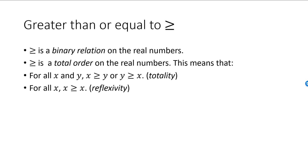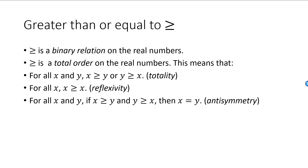Greater than, however, is not reflexive as x is not greater than itself. The third condition is called antisymmetry. Greater than or equal to is antisymmetric since if x is greater than or equal to y and y is greater than or equal to x, then it must follow that x and y are the same number. Antisymmetry becomes a little bit pointless for the binary relation greater than, since it's impossible for x to be greater than y at the same time that y is greater than x.